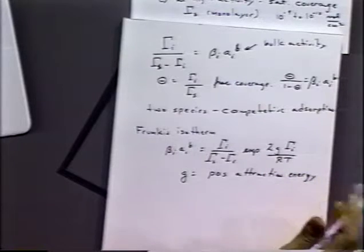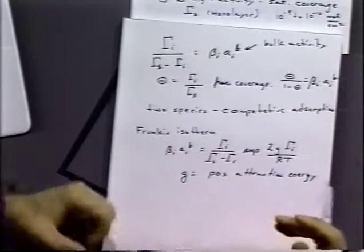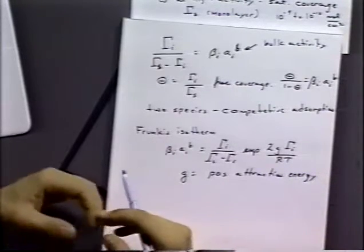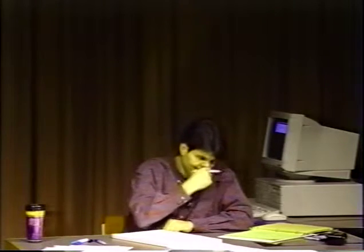There's another isotherm in the book called the Temkin isotherm, which has to do with adsorbates that repulse each other — there's a repulsive interaction. So these isotherms give thermodynamic amounts on the surface.